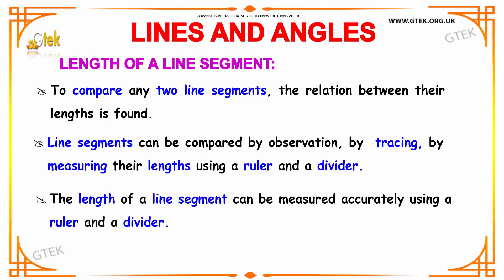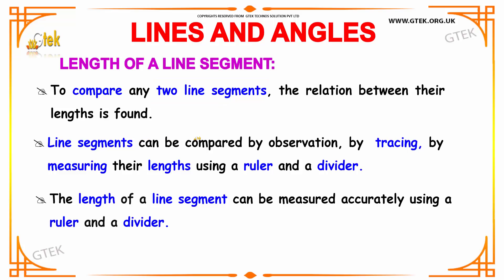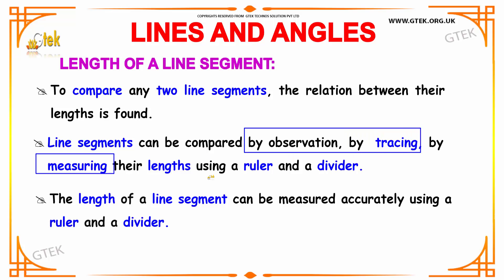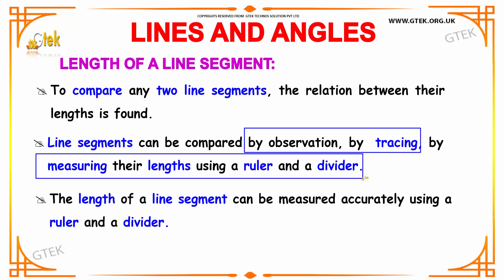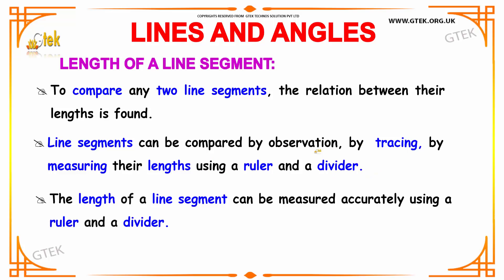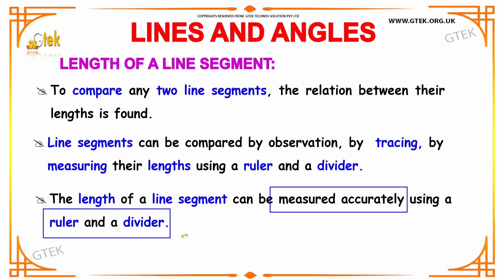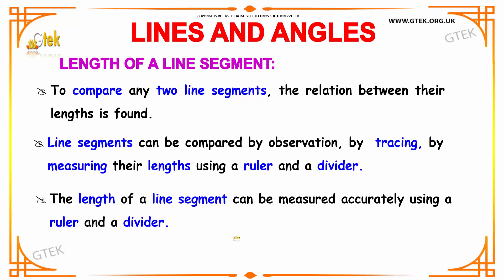What is meant by a Line Segment and the Length of a Line Segment? On comparing any two line segments, the relation between their lengths is found. This comparing procedure can be done by observation, or by tracing, or by measuring their lengths using a ruler and a divider. Among all these methods, the measuring method is the most accurate as it uses the ruler and a divider.